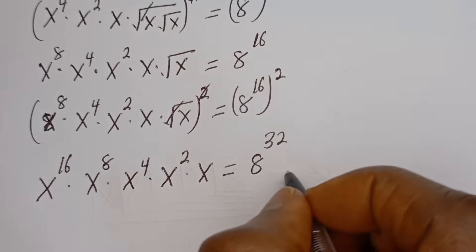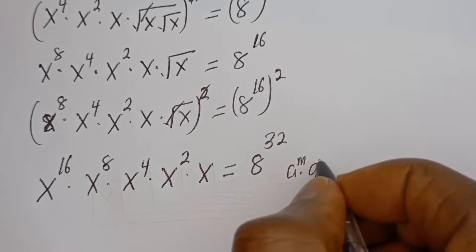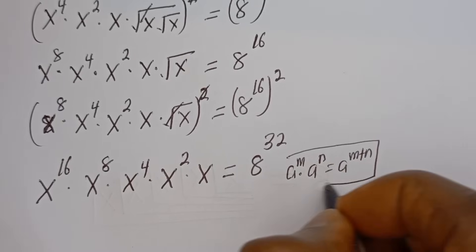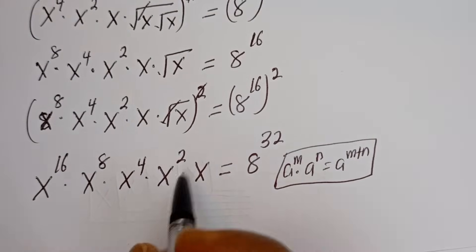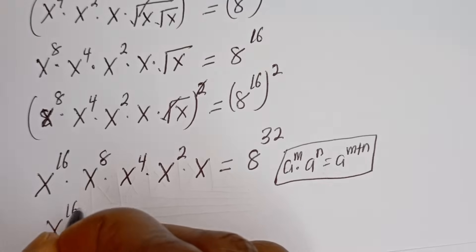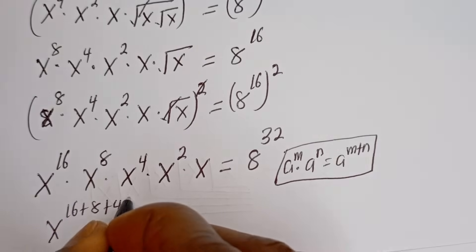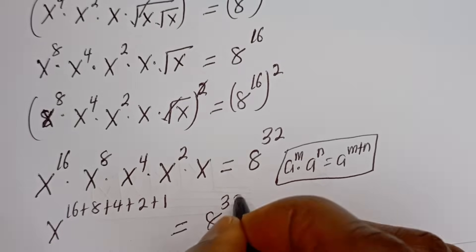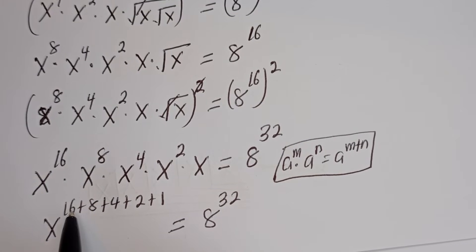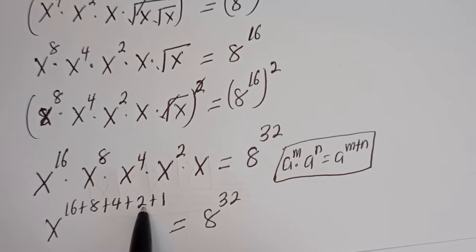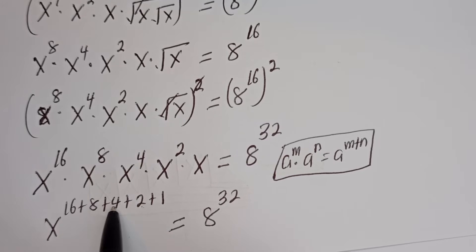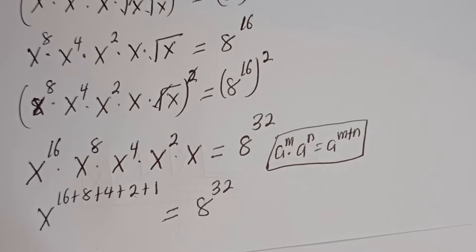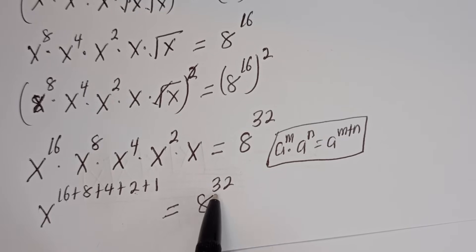Now we can see that if you have A to the power of M multiplied by A to the power of N, this is equal to A to the power of M plus N. So the whole of this is S to the power of 16 plus 8 plus 4 plus 2 plus 1 is equal to H to the power of 32. Then 16 plus 8 is 24, plus 4 is 28, plus 2 is 30, plus 1 is 31. So we have S to the power of 31 is equal to H to the power of 32.